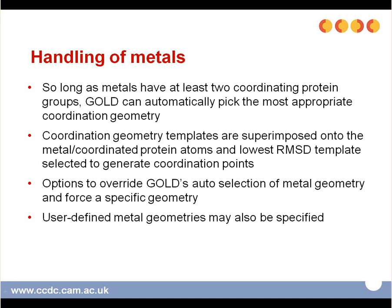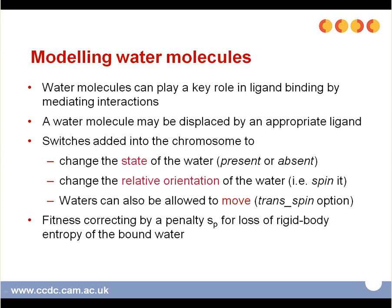If GOLD doesn't get it right — although generally it is very good — or if you have a geometry that the metal must absolutely have, you can override GOLD's metal geometry and specify your own geometry explicitly. Alternatively, for awkward geometries such as square planar, you can define your own geometry.